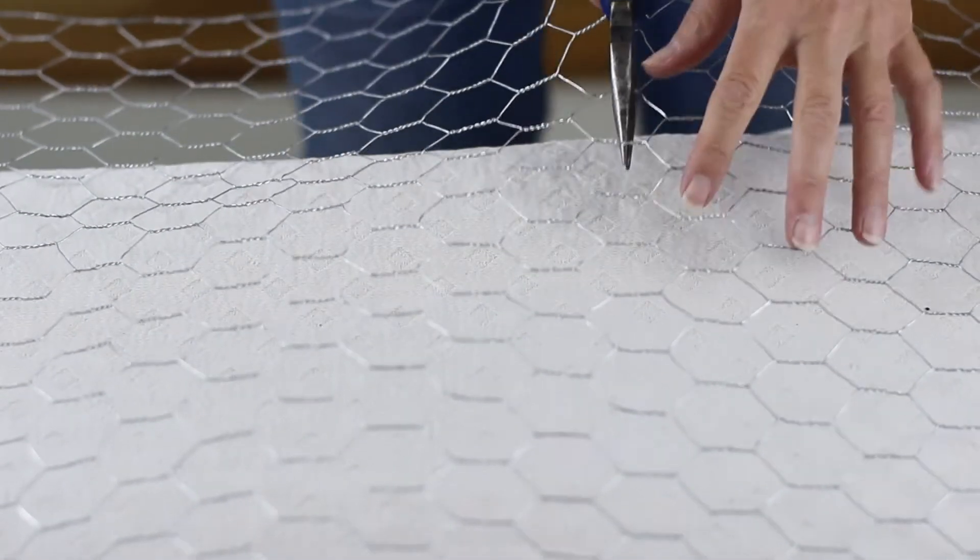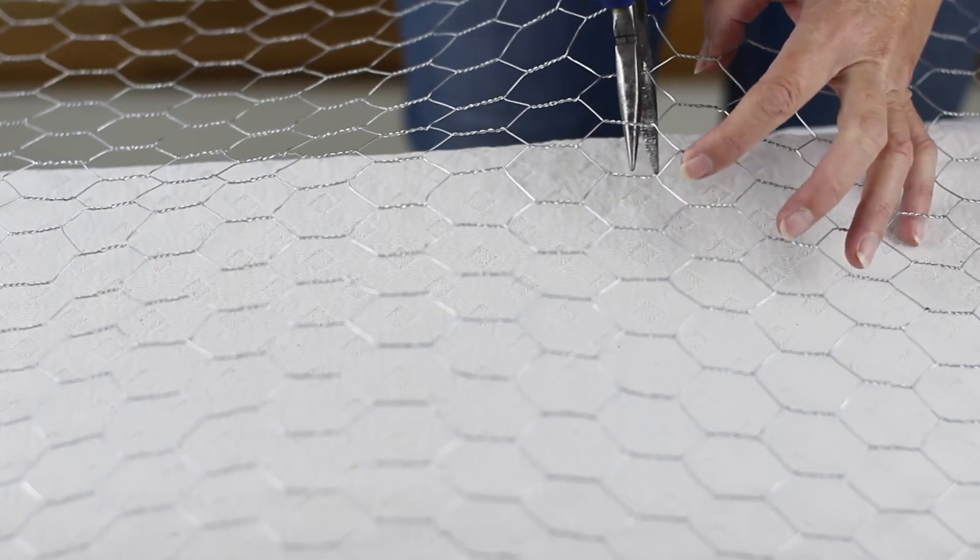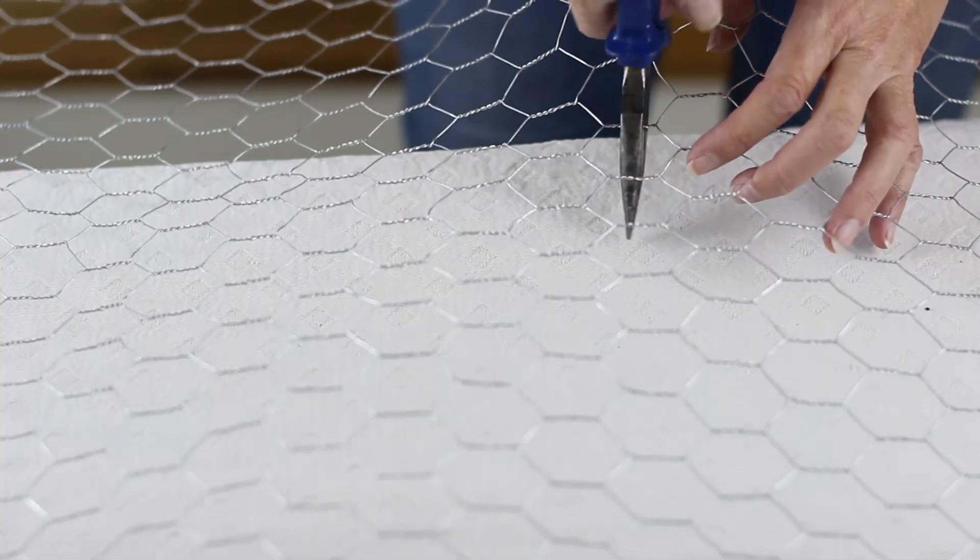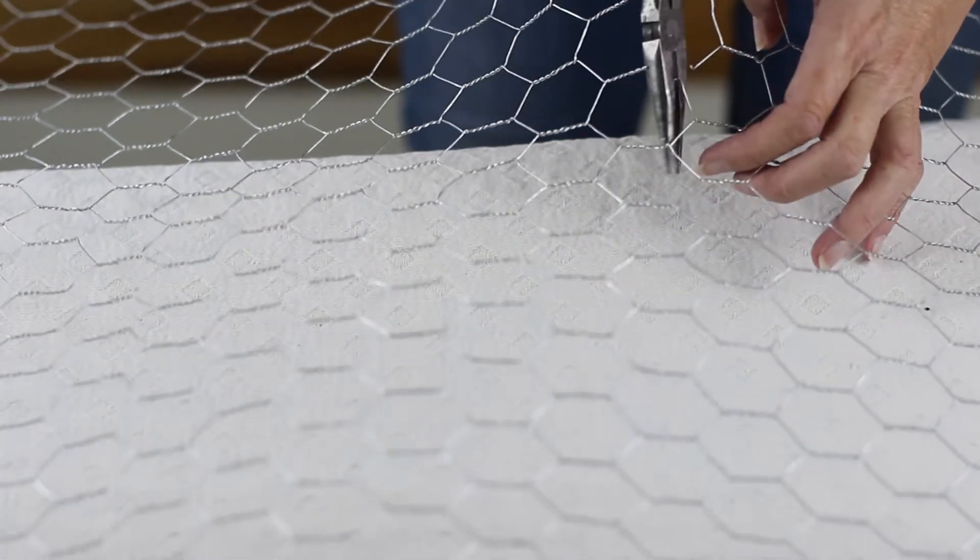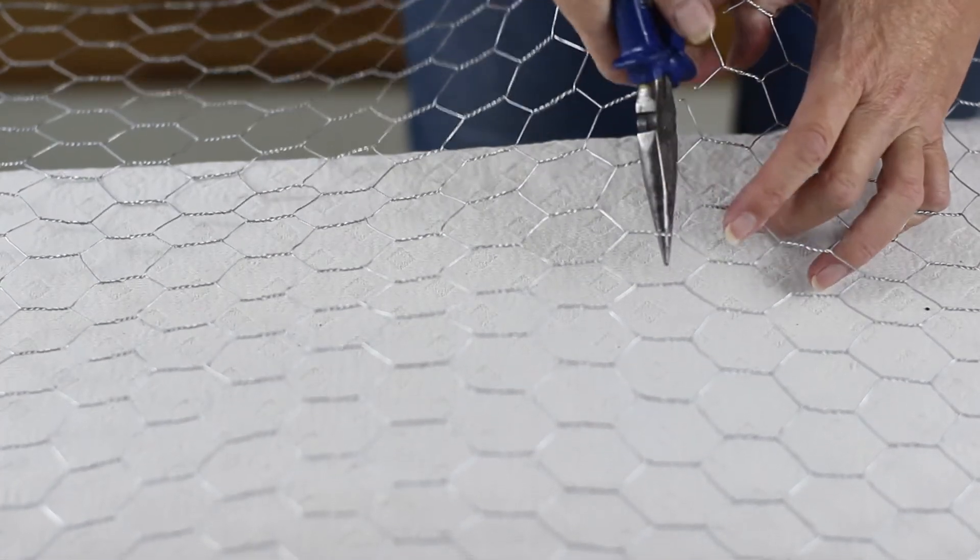And now it's time to cut some chicken wire. My chicken wire wasn't wide enough to cover the whole of the frame so I ended up having to patch two pieces on the bottom parts of the triangle and I just connected them with some more silver wire and you can't really notice it at all.